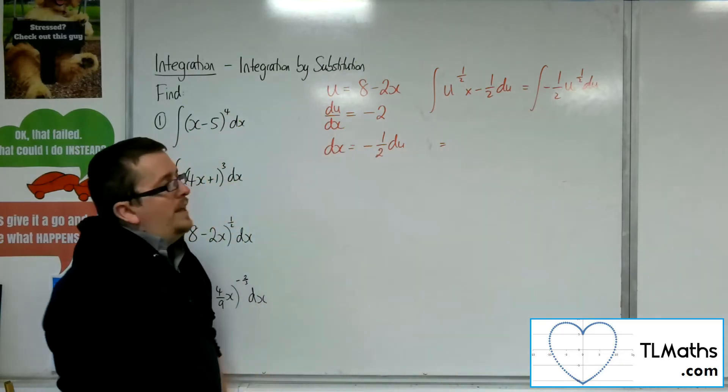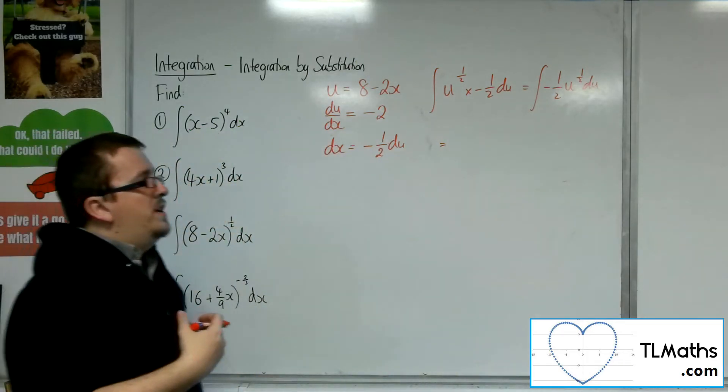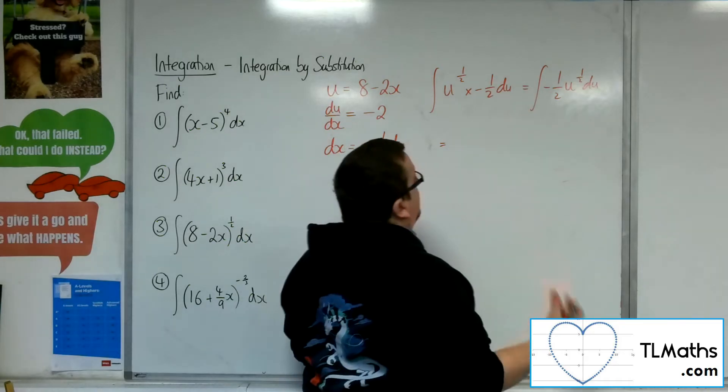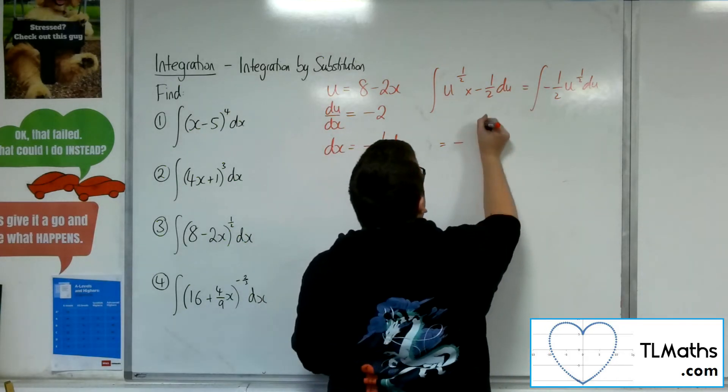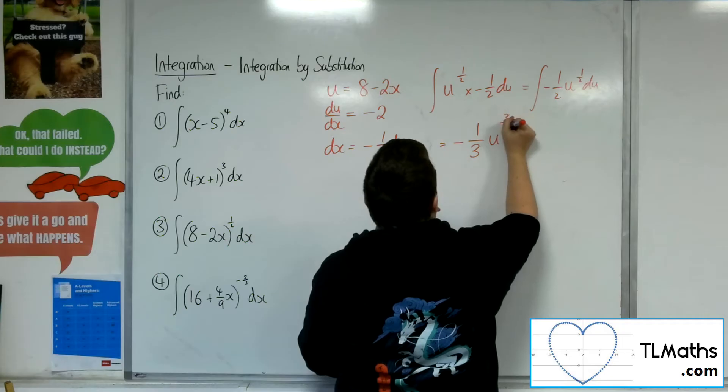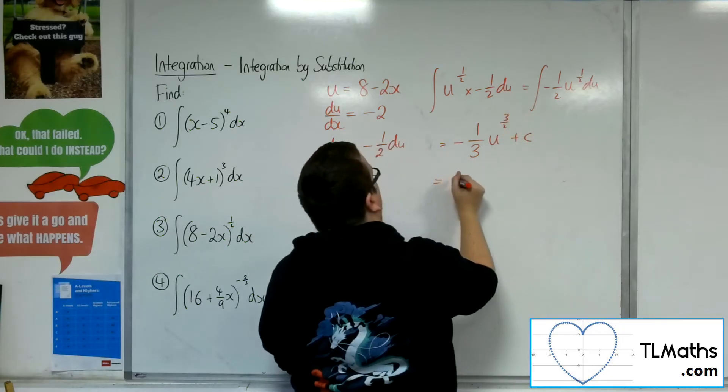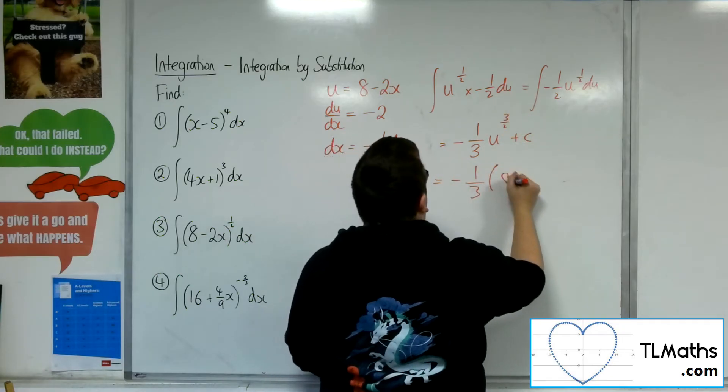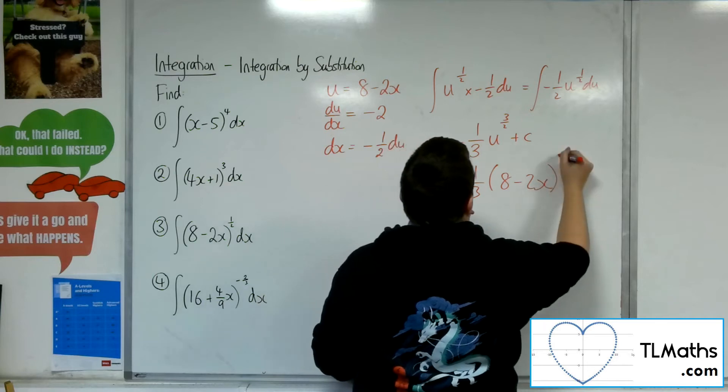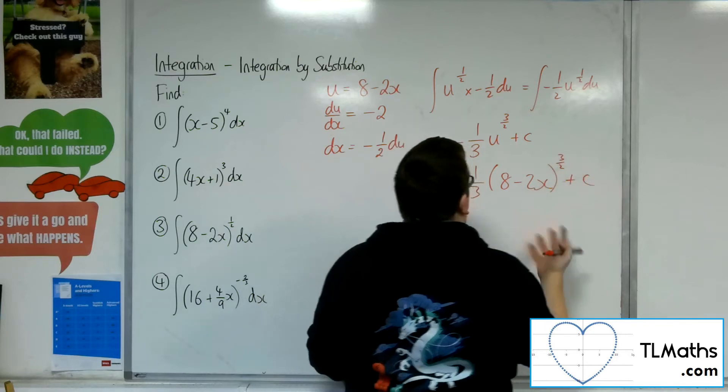Now adding 1 to the power, we get 3 halves. So dividing by 3 halves is the same as multiplying by 2 thirds. So we get minus 1 third u to the 3 halves plus c. Substitute the u back in. And we're done.